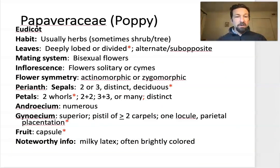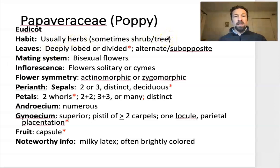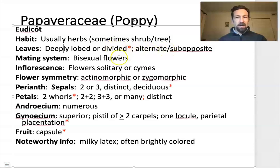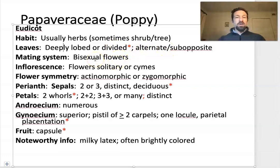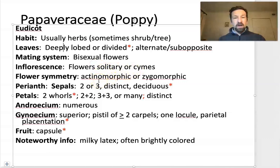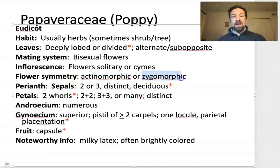We'll talk about some characteristics of the group and then look at some examples. Papaveraceae are eudicots and are most typically herbs, although there is some woodiness within the family. We've already mentioned the leaf lobing or divisions, and the leaf arrangement is typically alternate. Flowers are perfect or bisexual, and solitary or in cymes. Their symmetry varies depending on whether they are members of the old Fumariaceae group or the traditional Papaveraceae. Members of traditional Papaveraceae are radially symmetric or actinomorphic, while those in the old Fumariaceae are bilaterally symmetric, also called zygomorphic — those are synonyms.